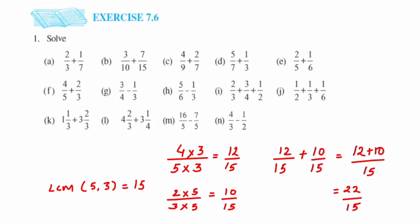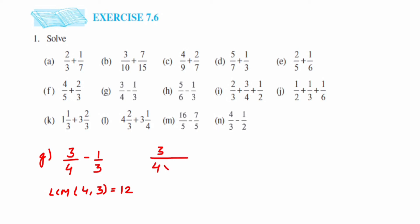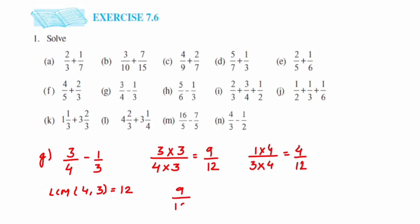Problem G is 3 by 4 minus 1 by 3. Again denominators are different, so we take the LCM of 4 and 3, which is 12. For the first number 3 by 4, we multiply by 3 to get 12, giving 9 by 12. For 1 by 3, we multiply by 4 to get 12, giving 4 by 12.